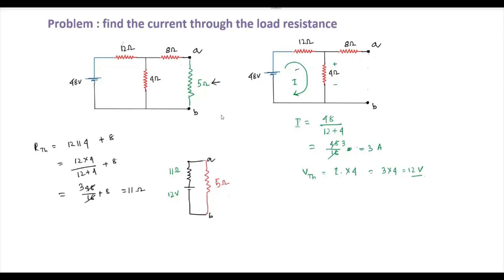Now we find the current through the load resistance of 5 ohms. The current equals 12 by 11 plus 5, which equals 12 by 16 equals 3 by 4 amperes. That's the answer.